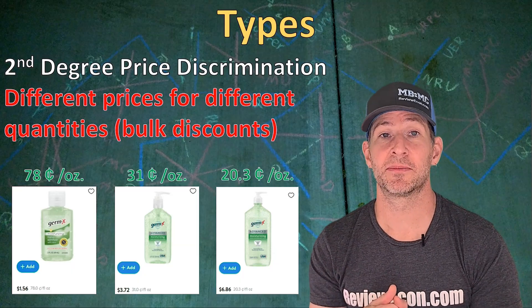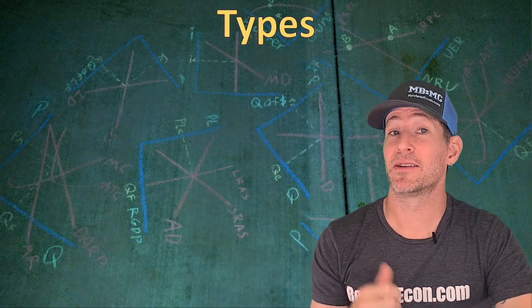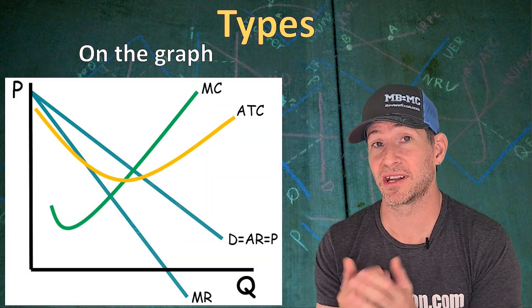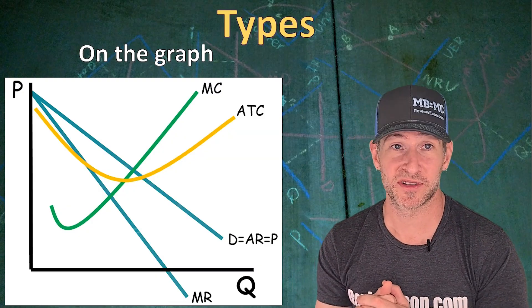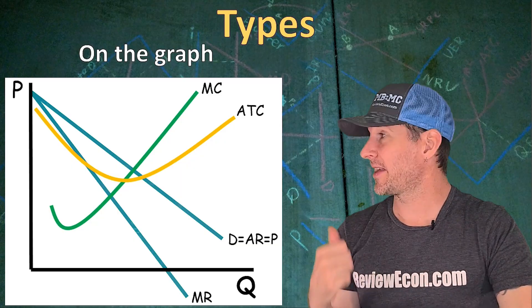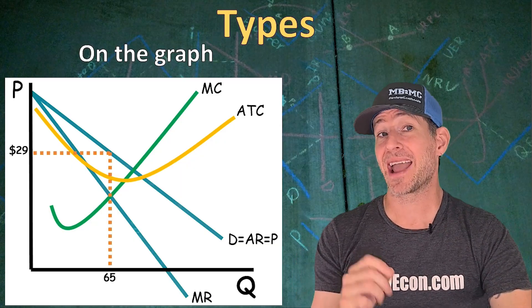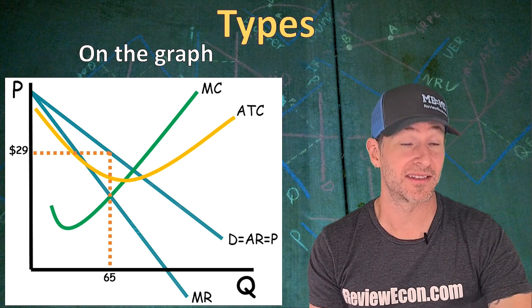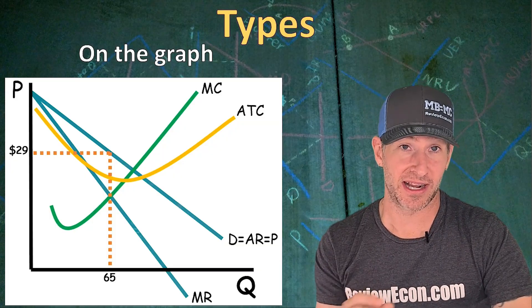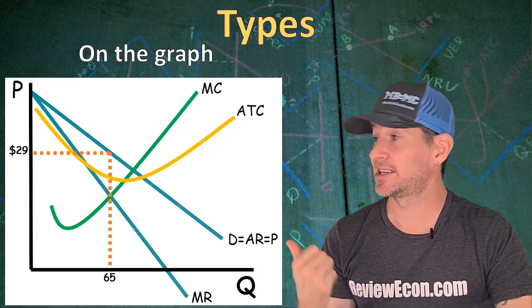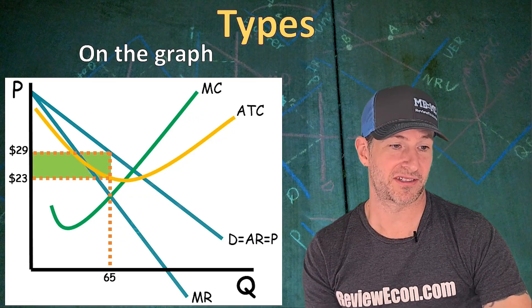Let's take a look at the monopoly graph — that's where you're going to see price discrimination in AP microeconomics. Let's see how charging different groups of people different prices looks on that graph. We know that the MR equals MC quantity is the profit maximizing quantity, 65 here, and we have a profit maximizing price of $29. This is a single price monopoly, meaning they are charging the same price for all units of output — that's the typical monopoly you'll see in microeconomics. Here is our profit box for this monopoly.